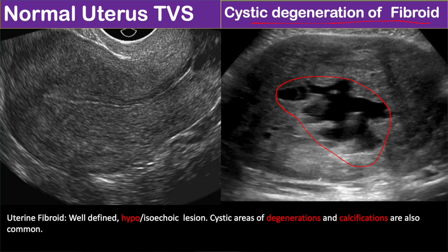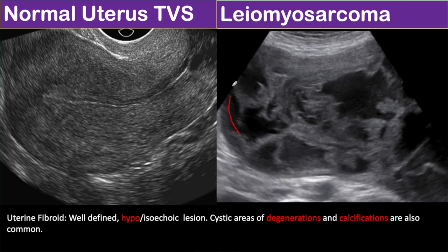A very large cystic lesion with solid component can be concerning for a malignant mass. While leiomyosarcoma is possible in this case, in the background of uterine fibroid, leiomyosarcoma is rare compared to degenerating fibroid. If there is still diagnostic uncertainty then you can go for histopathological correlation. Here you can see a large heterogeneous solid cystic uterine mass almost entirely filling the uterus — this is a case of uterine leiomyosarcoma.